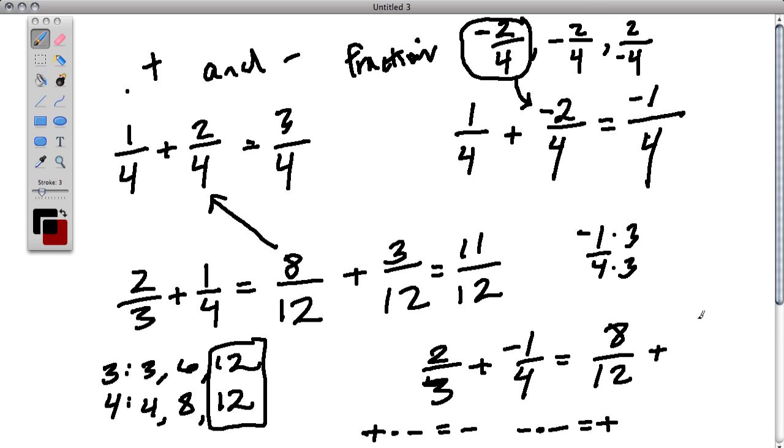So negative 1 times 3 is a negative times a positive. Think of it as just 1 times 3, which is 3, and then say, well, what value is it going to be? It's going to be negative because a negative and a positive multiplied together gives us a negative product.